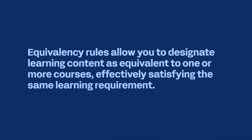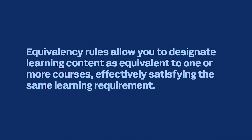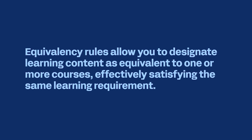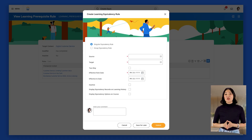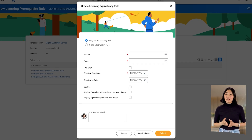Similar to prerequisite rules, equivalency rules allow you to designate learning content as equivalent to one or more other courses, effectively satisfying the same learning requirement. This functionality is useful for managing high-demand courses, minimizing repetitive content, and offering alternative learning opportunities to fulfill specific requirements. Let's return to our example, where Debra needs to create some equivalency rules for digital and blended course content. She begins by navigating to the Create Learning Equivalency Rule task, where she can select the type of rule that best meets her needs for the Sales Onboarding Initiative.